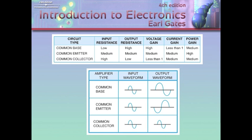The table here shows some of the common attributes associated with the three different configurations. This is a great table to know how to find in your book. Since the common emitter is the most common, let's first take a look at it. Input resistance or impedance for common emitter is medium, common base is low, and common collector is high. So an engineer with a medium input impedance would use a common emitter configuration.